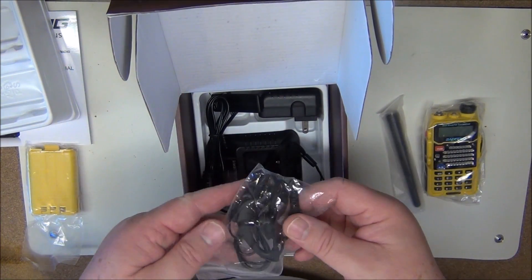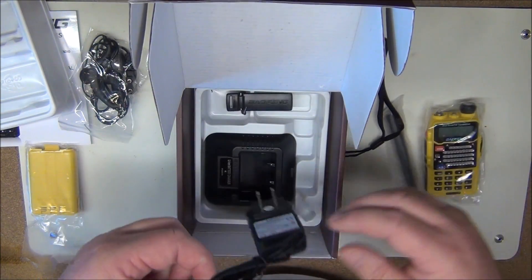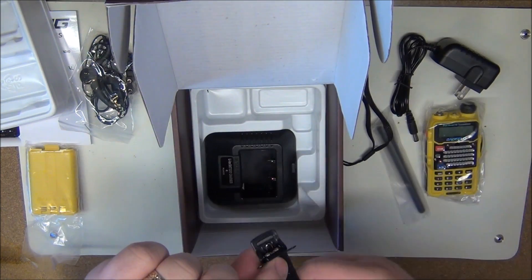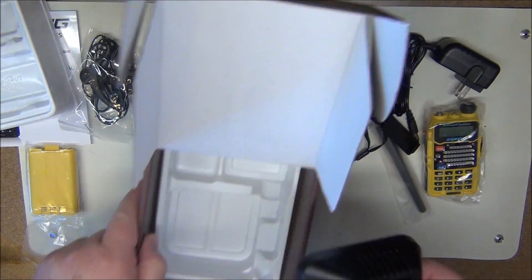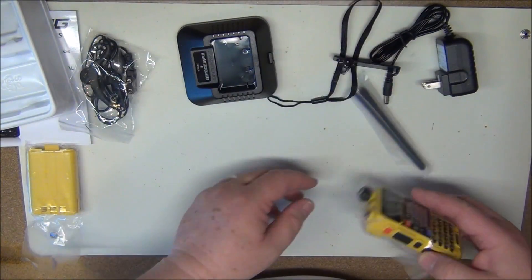Antenna, there's the earpiece, the wrist strap, the charger wall wart, there's the belt clip, and the charger base. So everything appears to be here.